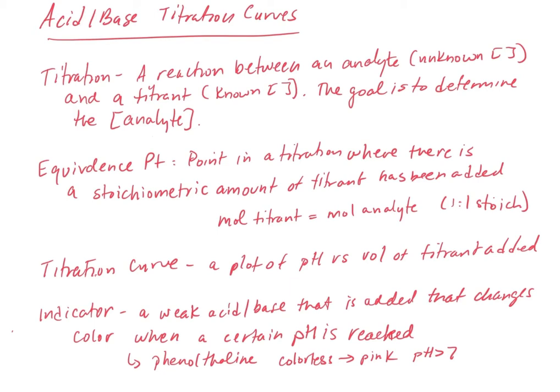A titration curve is a plot of pH versus volume of titrant added. We actually take the pH using a pH meter and literally plot it as a function of the volume of titrant added. That is the best way to find where the equivalence point is.